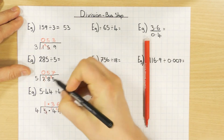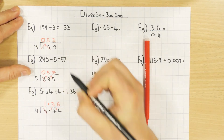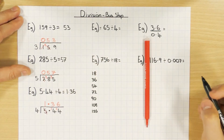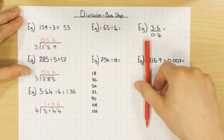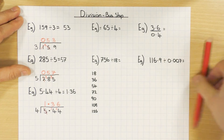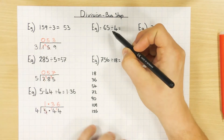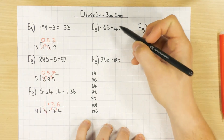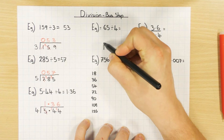I should note the answer to the previous example (285 ÷ 5) was 57. Now let's look at 65 divided by 4 — same process, using the bus stop again.